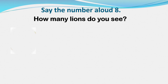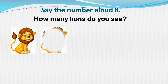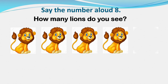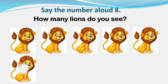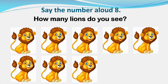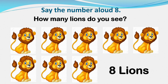Let us count: one, two, three, four, five, six, seven, and eight. So there are eight lions — we can see eight lions! A lion is a wild animal; it lives in the jungle. It is the king of the jungle!